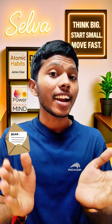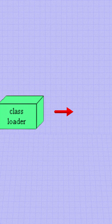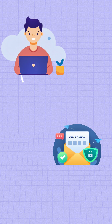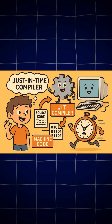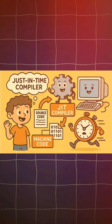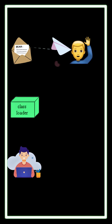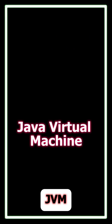Think of Java like sending a letter to a friend in another country. The class loader finds the letter, the verifier checks it for mistakes, and the JIT compiler translates it instantly so your friend can read and act immediately. All of this happens inside the JVM — the Java Virtual Machine — your friend's personal post office that understands your letter anywhere in the world.